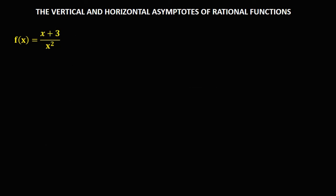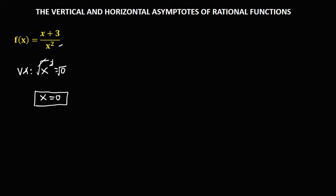For this rational function, to solve for the vertical asymptote, we again equate the denominator to zero, then solve for x by taking the square root. So x is equal to 0, and this is the vertical asymptote.